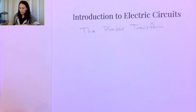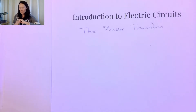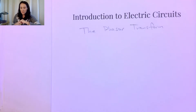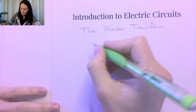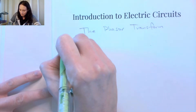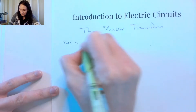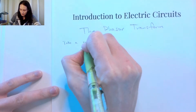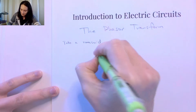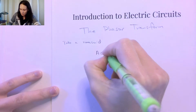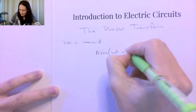Today I want to introduce the phasor. The phasor is a complex number that models a sinusoid. Now that we're talking about AC, we have sinusoidal AC signals, and we're going to use the phasor to make our computations easier. The phasor transform will take a sinusoid in the form A·cosine(ωt + φ).